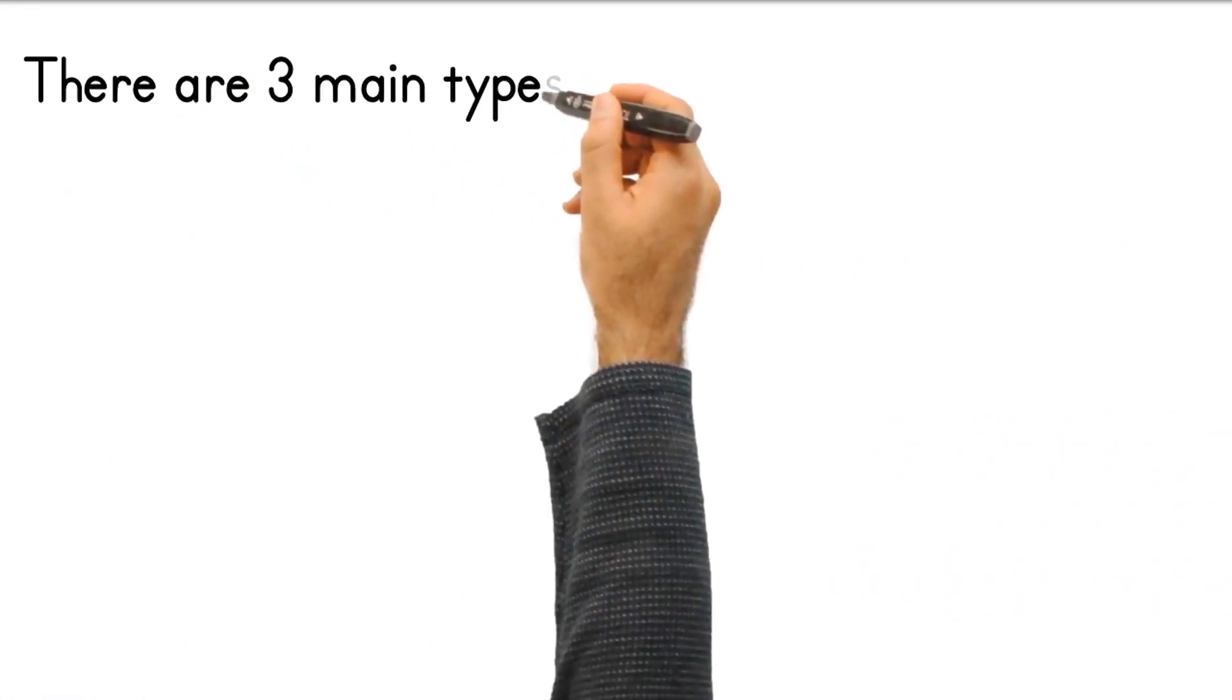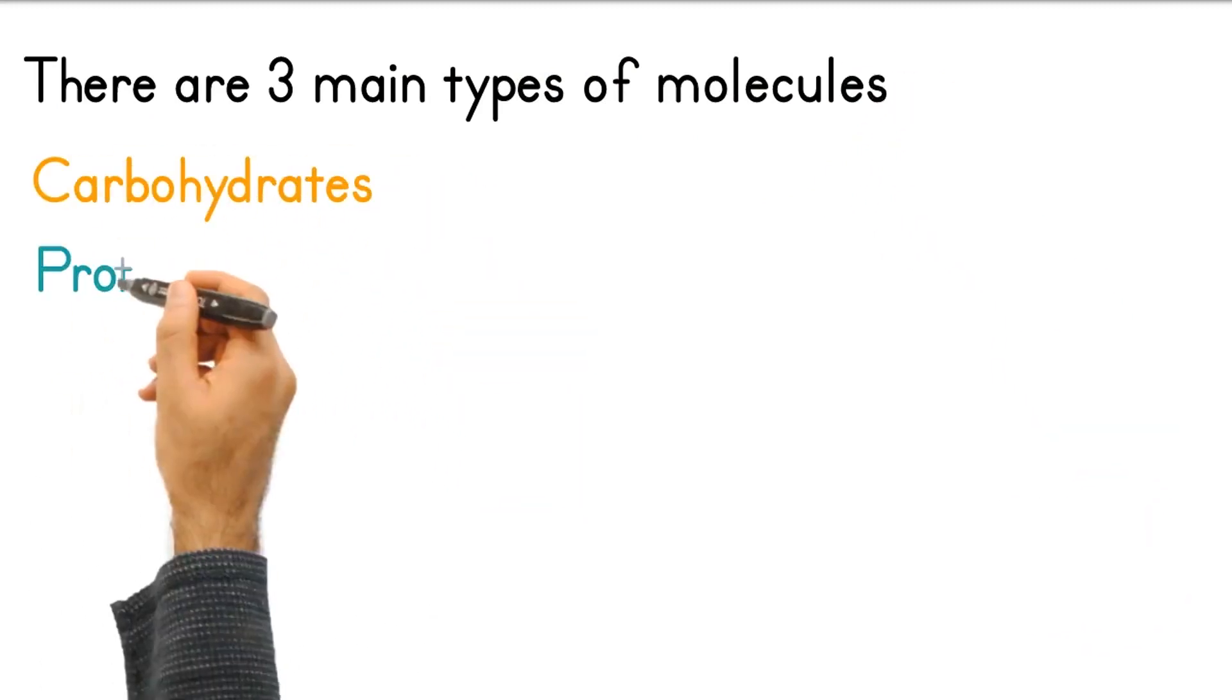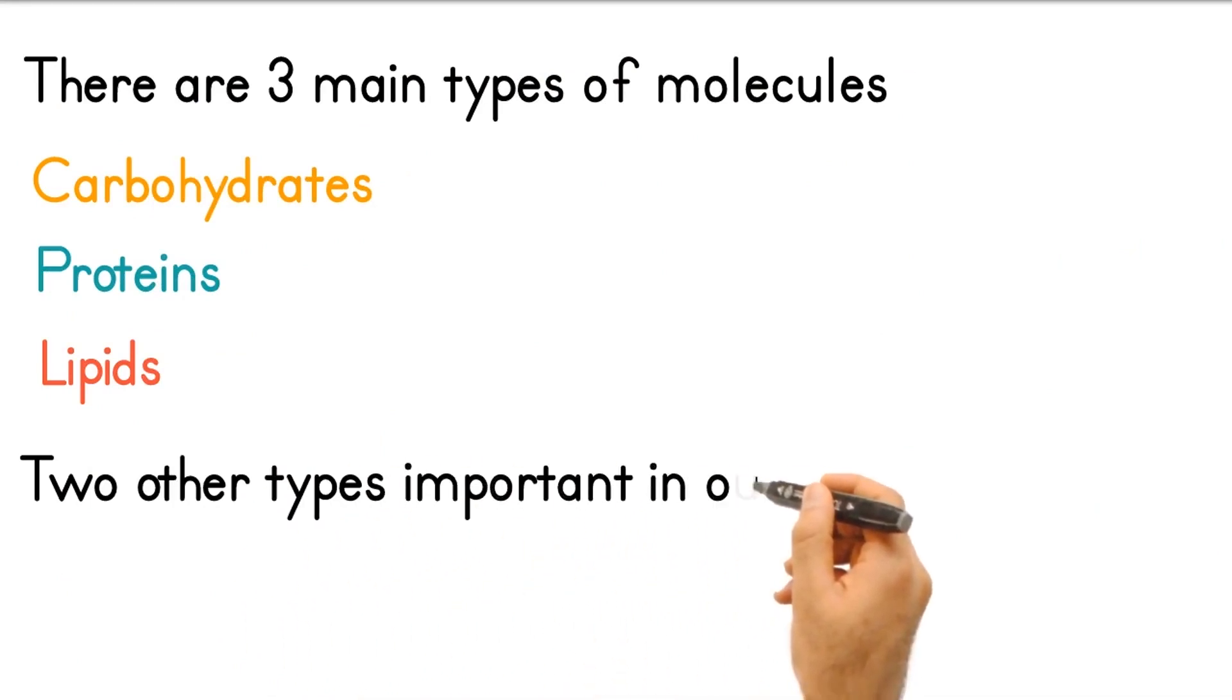There are three main types of molecules that you need to know: carbohydrates, proteins, and lipids. Two other types that are important in our diet are vitamins and minerals.